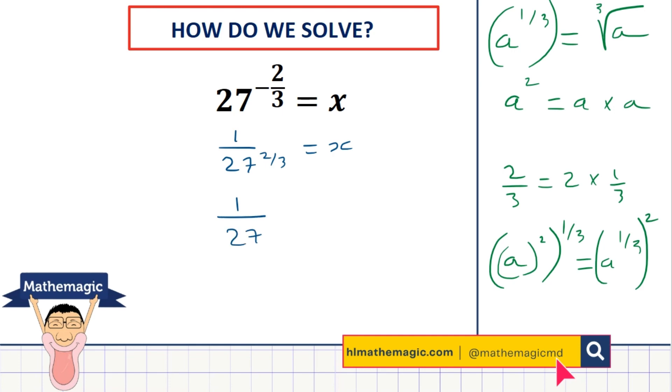So I would suggest here that you go 1 over 27 to the power 1 third and then square that result. So if we take the cube root of 27, we'll find that that's 1 over 3, which has to be squared. And that's going to be equal to x.